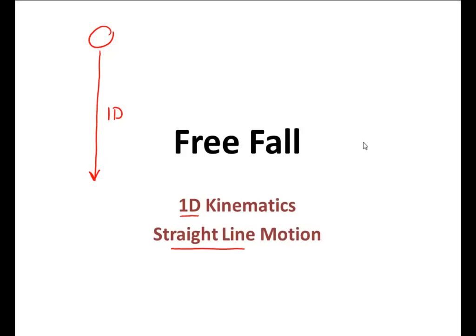The same way, we could also talk about a ball that is being thrown upwards, and it goes up, hits the highest point, and then it comes back down in the same exact path. Both of those are examples of one dimensional kinematic motion, straight line motion. Today though, we're looking at simply a free falling object.